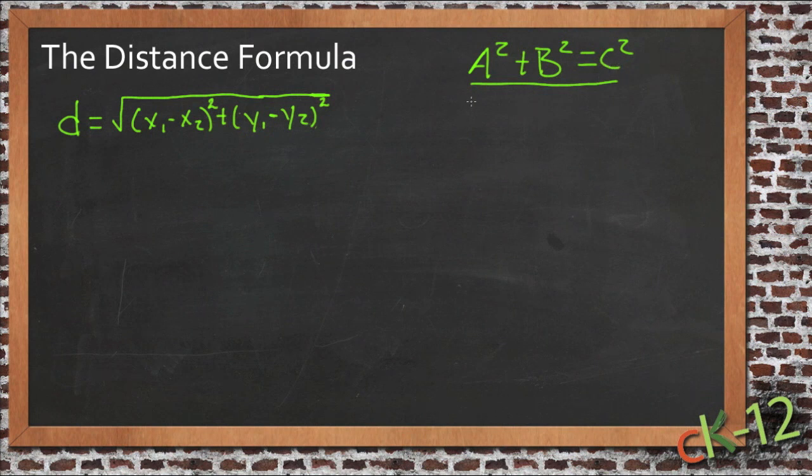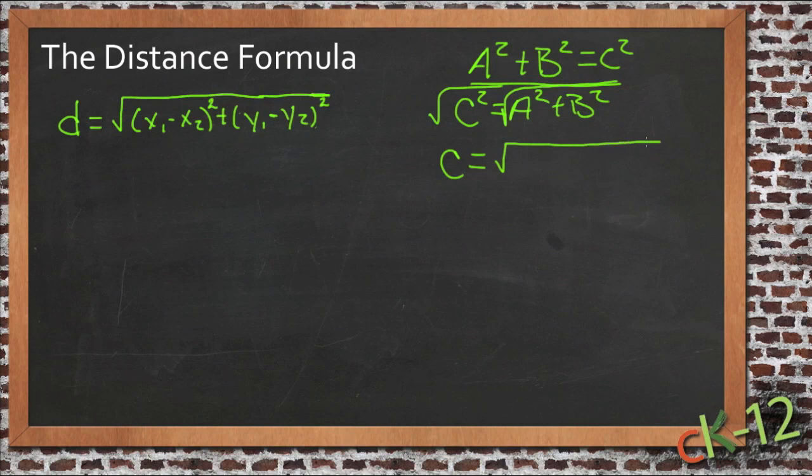Well to do that, I'd need to solve for c. So let me rewrite this with c on the leading edge. c equals the square root of a squared plus b squared. Then if I wanted to solve for c, I'd have to take the square root of both sides because right now I just know what c squared is. Well that would tell me that c would be equal to the square root of a squared plus b squared.